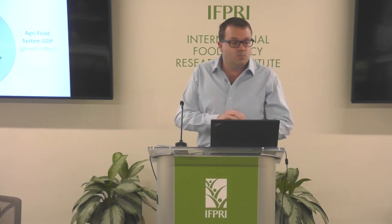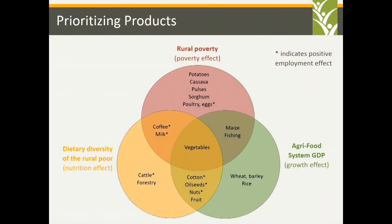Here's one example. This is some work we've been doing recently — together with another Gates project as well, actually. This is a very simplified view of the kind of results that come out of our modelling analysis. We're looking at all the different value chains — in this case, Tanzania. This is work in progress. We're looking at all the different value chains in Tanzania and asking: if you could expand them, which products would be most effective at reducing rural poverty? That's the red circle at the top.